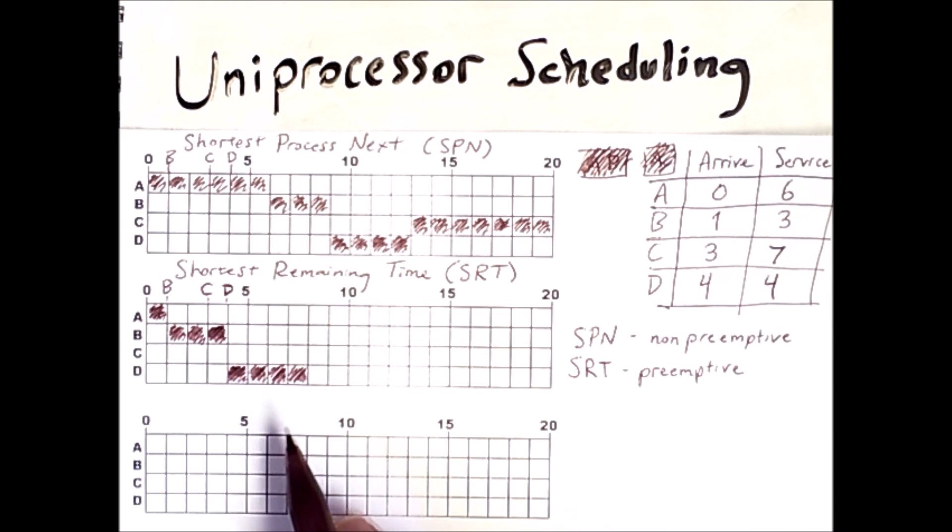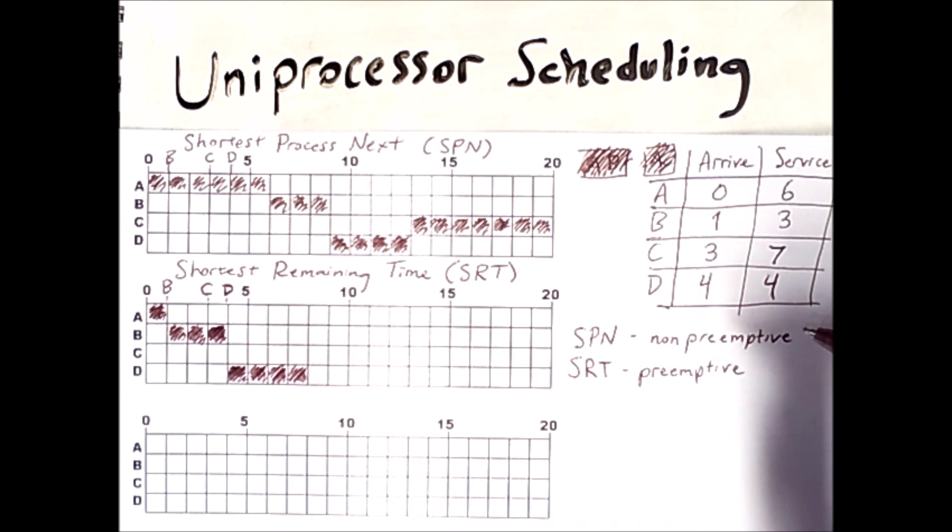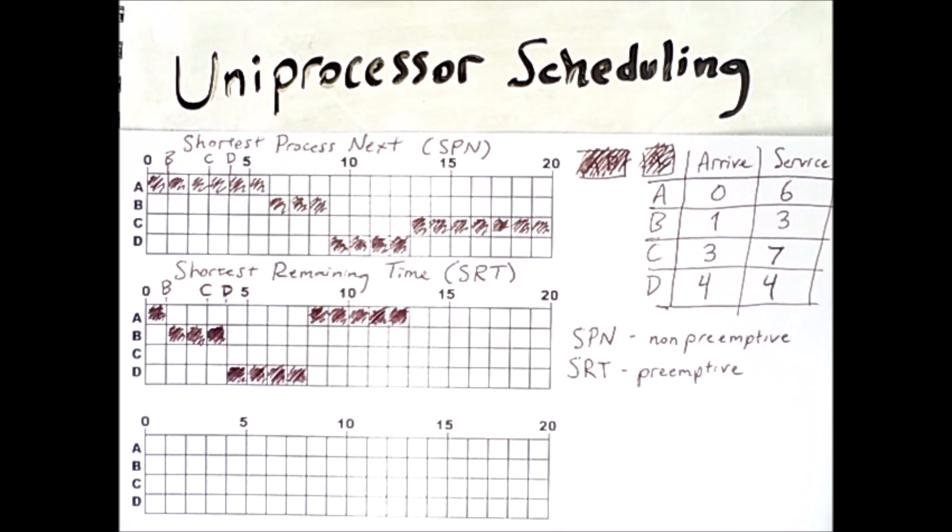Now that D is finished, we can go back and see which should be running now. So C still requires seven units to run, whereas A has only five left, so A finally gets to finish. And at this point the only process left in the system is C, which runs for its full seven units.